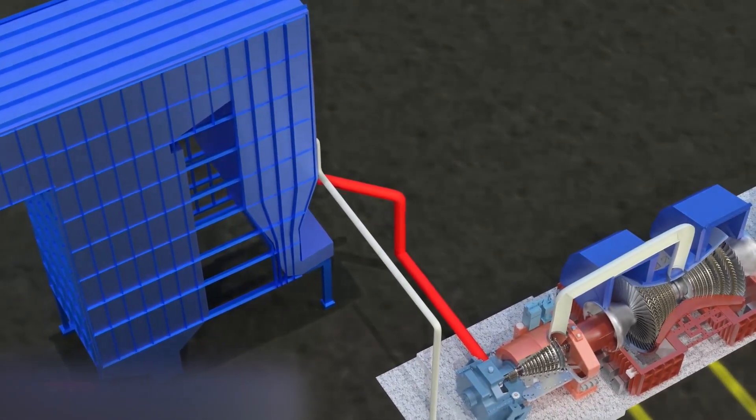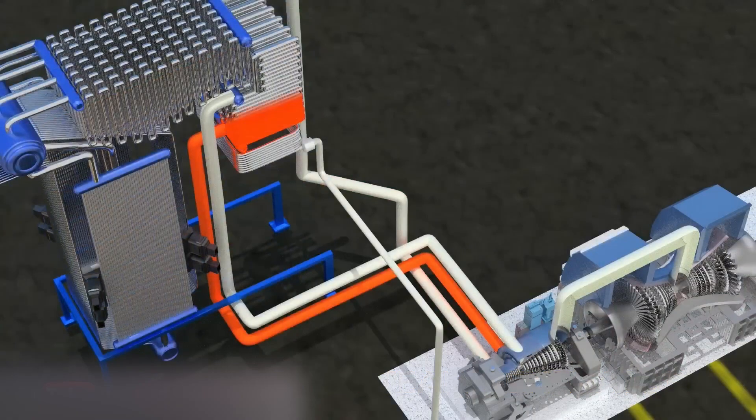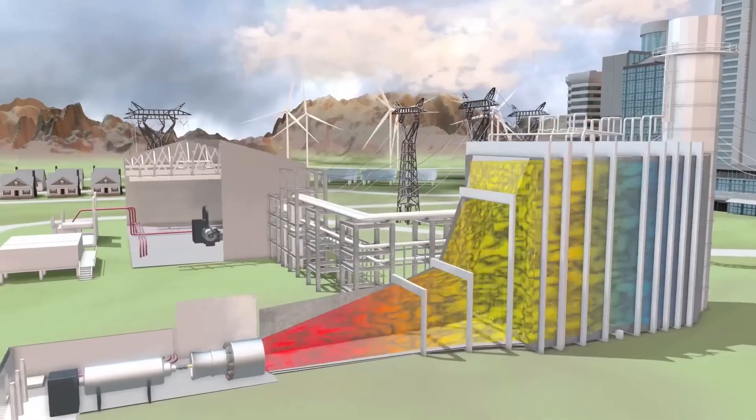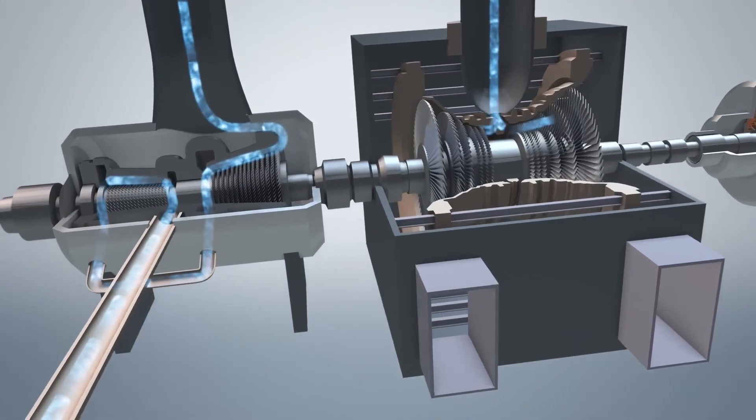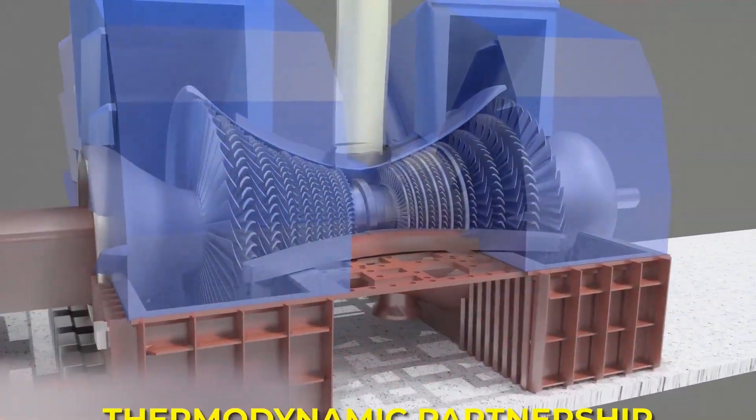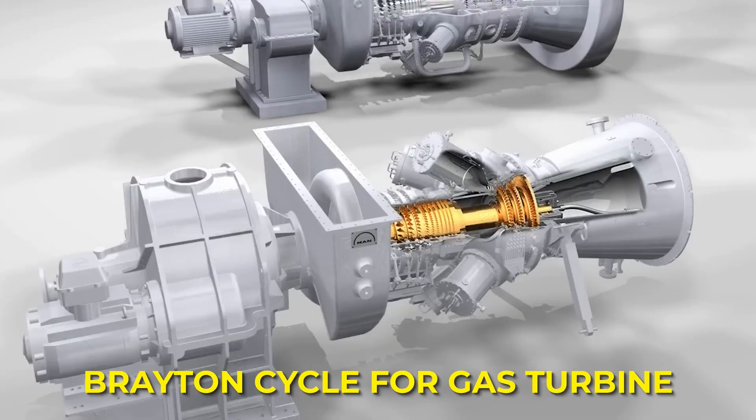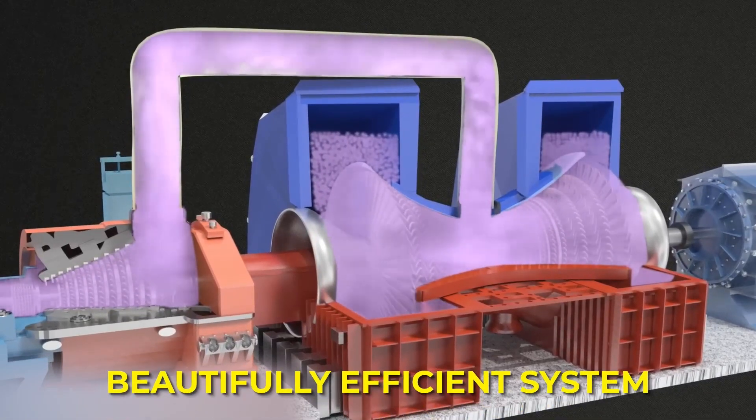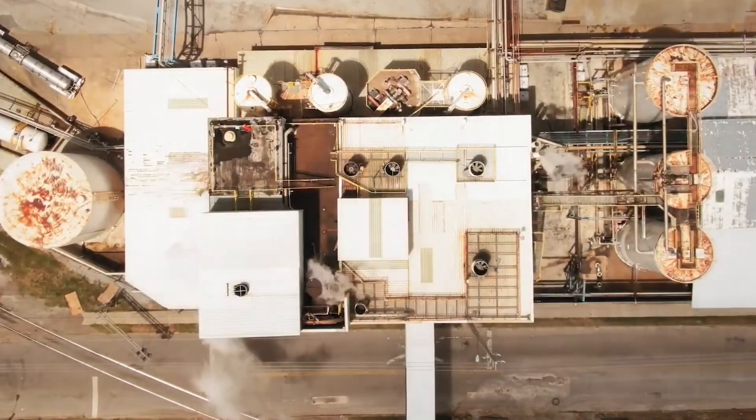In this configuration, the exhaust from the gas turbine is directed into a heat recovery steam generator, essentially a large boiler. There, the heat is used to convert water into steam. That steam powers a second turbine, a steam turbine, which drives another generator. Together, these two turbines form a thermodynamic partnership: the Brayton cycle for the gas turbine, and the Rankine cycle for the steam turbine. The waste heat from one becomes the input energy for the other, creating a beautifully efficient system.